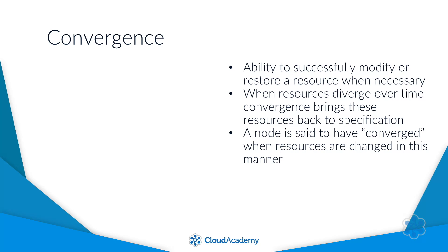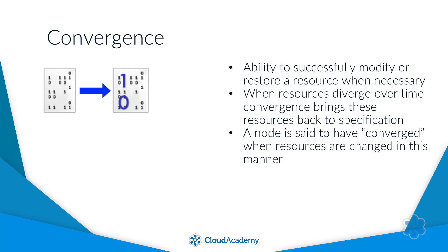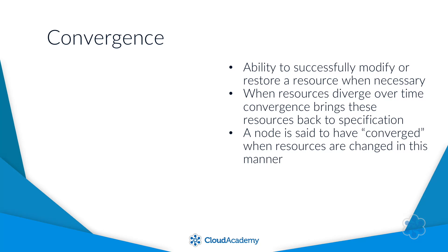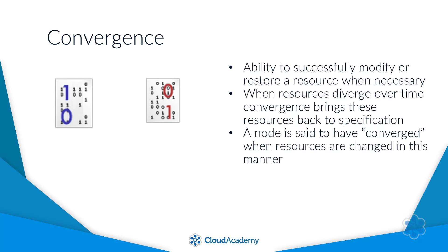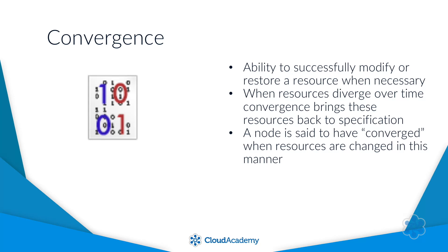Convergence is the ability for configuration management runs, upon executing idempotently, to successfully modify or restore an existing environment to that which is specified in code, when necessary. When resources diverge over time, or when new changes are introduced, convergence is successful when resources are able to converge to the desired state as specified in configuration management. When an in-place idempotent run occurs and any needed changes are enacted successfully, the managed node is said to have converged.